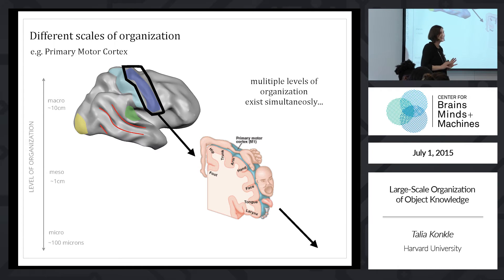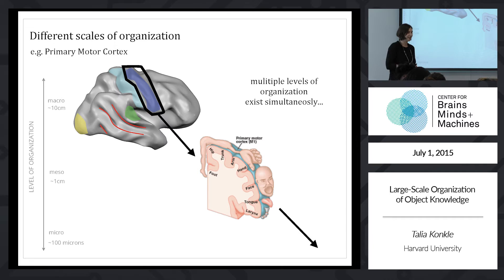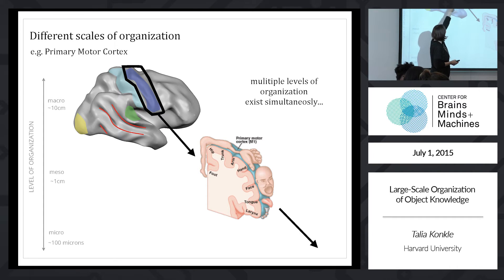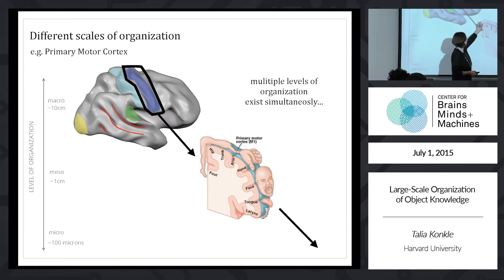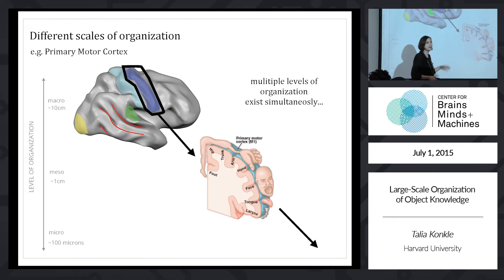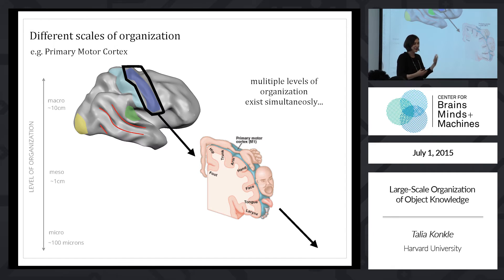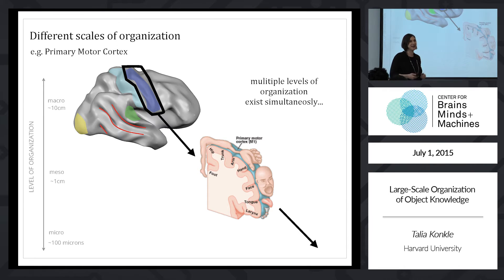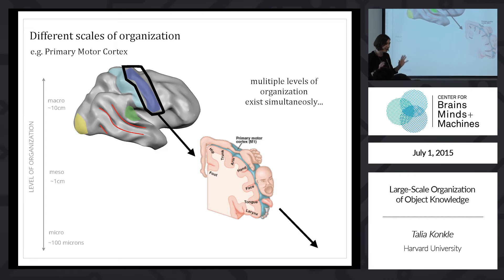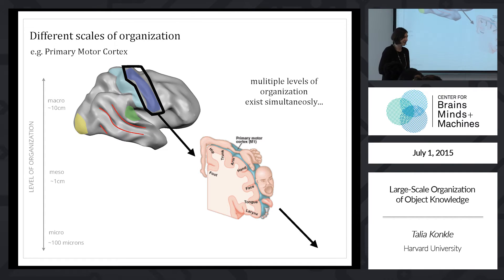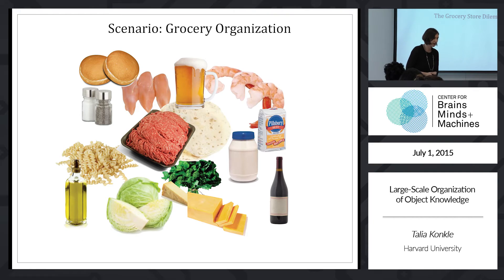This question is doubly tricky because there are different scales of organization. If we consider the primary motor cortex, within it there are subdivisions for different body part movements, and within those, further subdivisions. Trying to label what a part of the brain does is a multi-scale problem. We want to understand multiple levels of organization existing simultaneously.